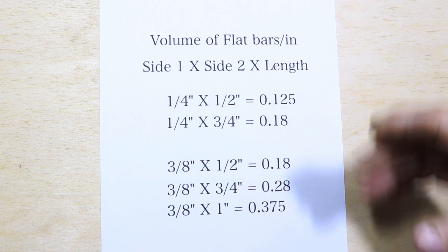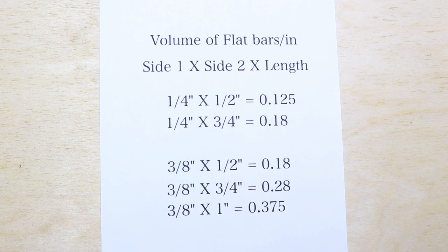To calculate the volume for any four sided bar stock is exactly the same. It's side one times side two times the overall length.